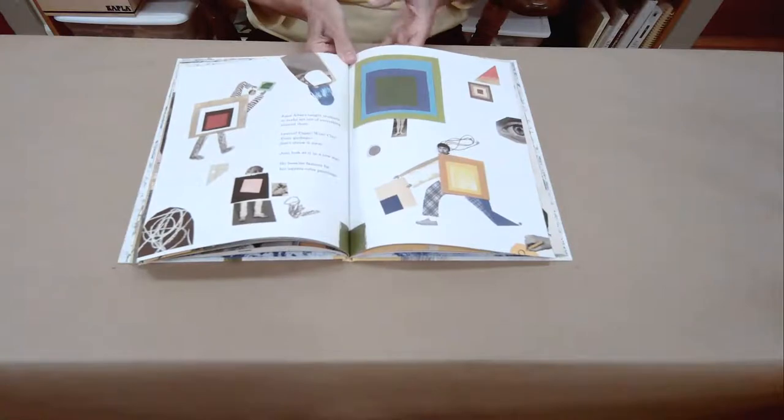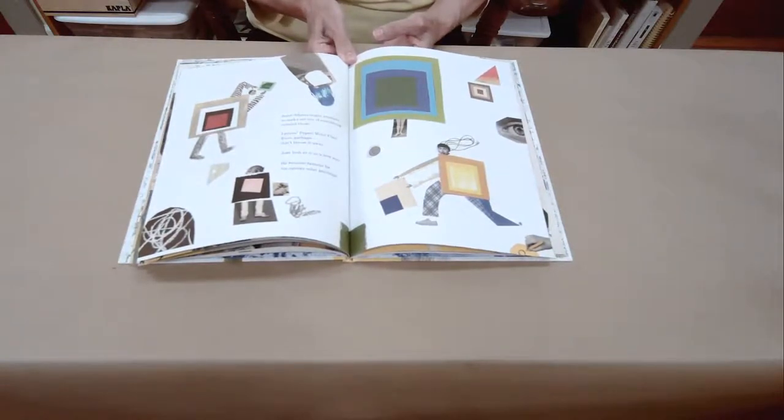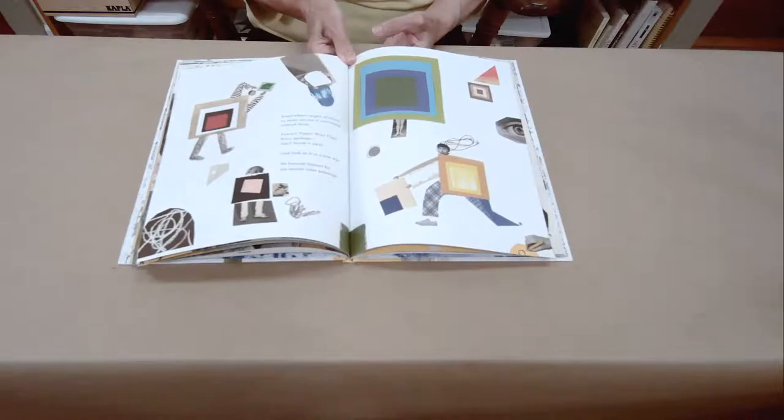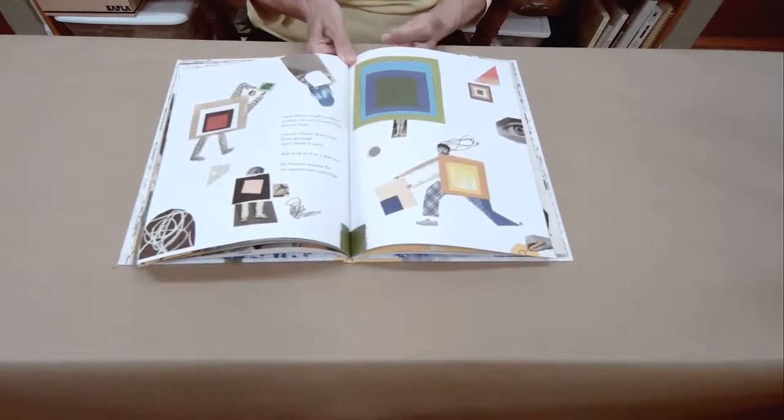Joseph Albers taught students to make art out of everything around them. Leaves, paper, wire, clay, even garbage. Don't throw it away. Just look at it in a new way. He became famous for his square color paintings.